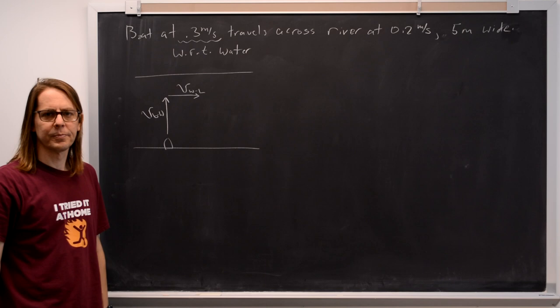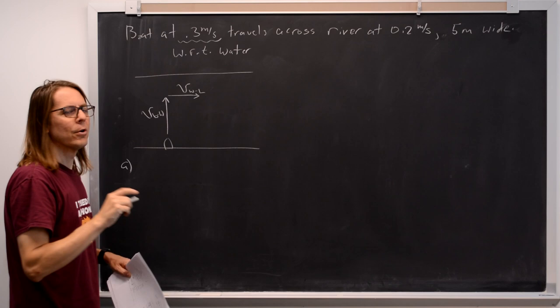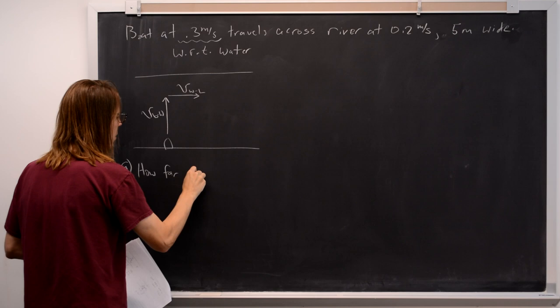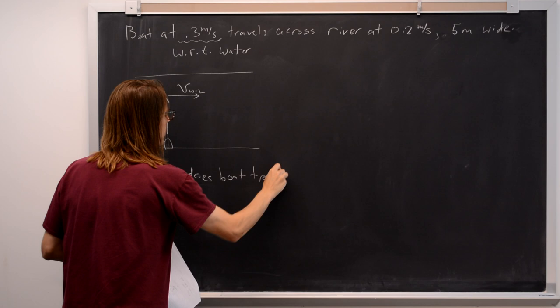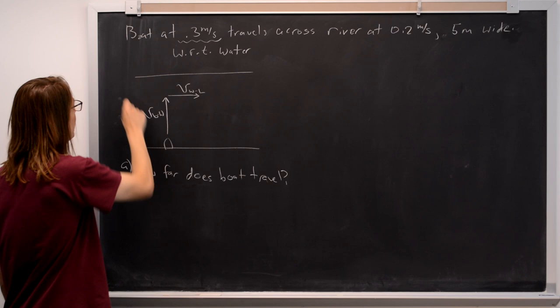So let's see what the question is. The first question is how far does the boat actually travel if it attempts to do this? Because you can see what's going to happen just intuitively. It's going to try to go straight across, but it's actually going to get swept by the river. So it's not going to just go five meters, it's going to go a little bit farther.